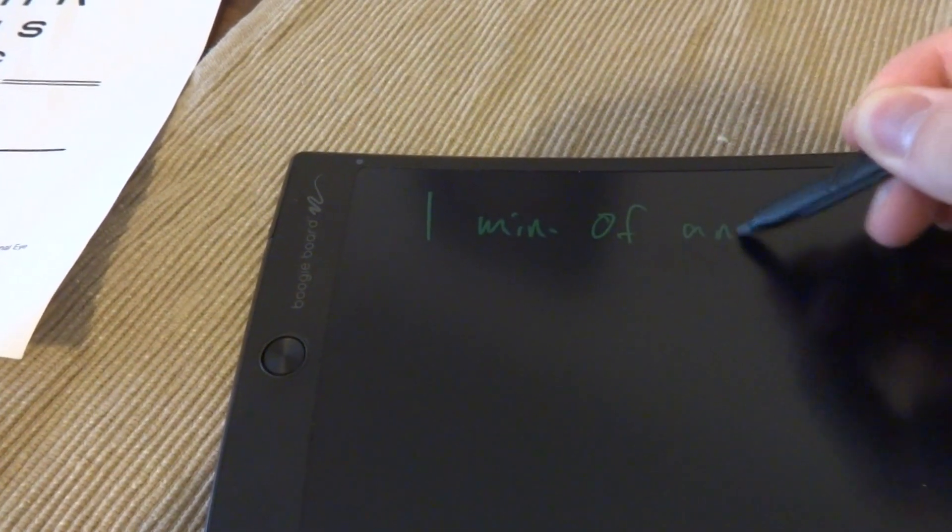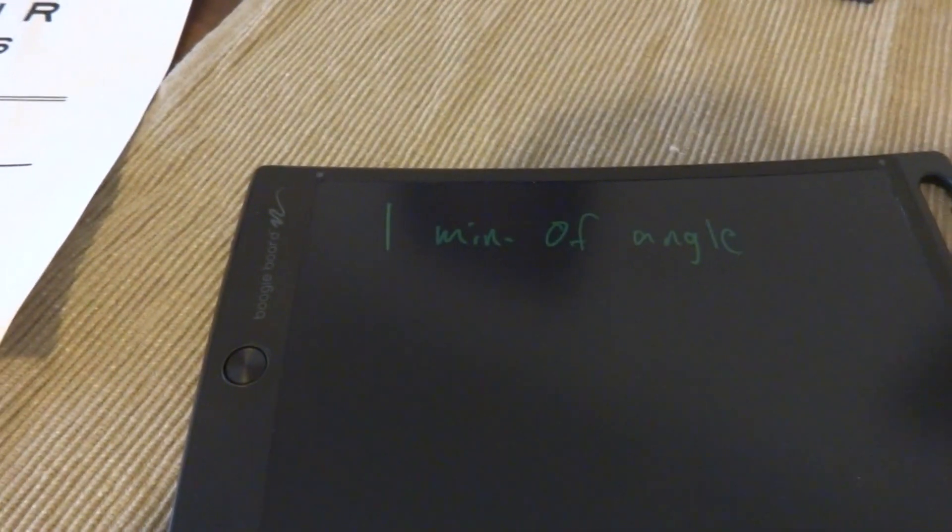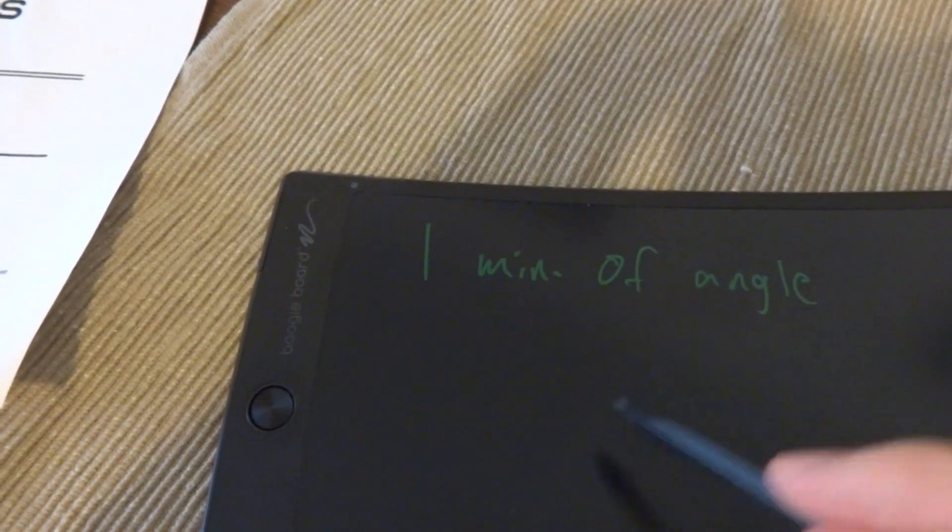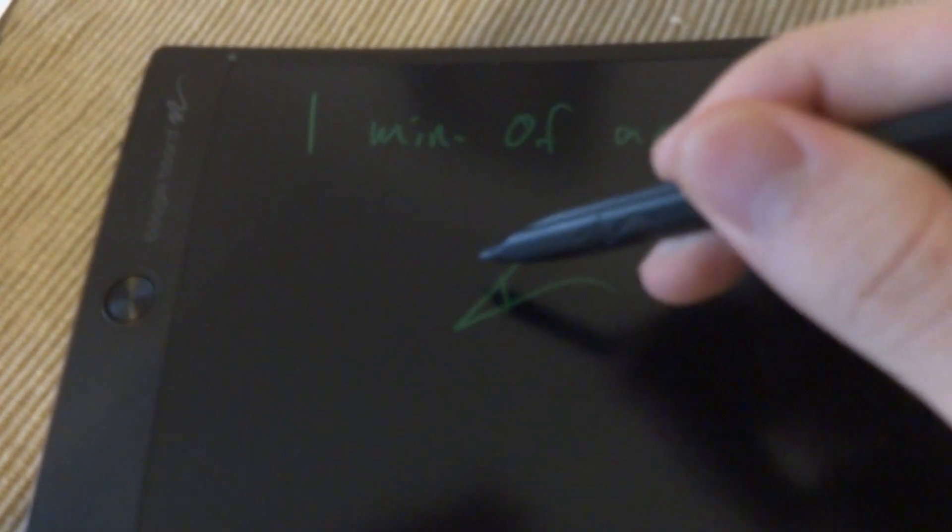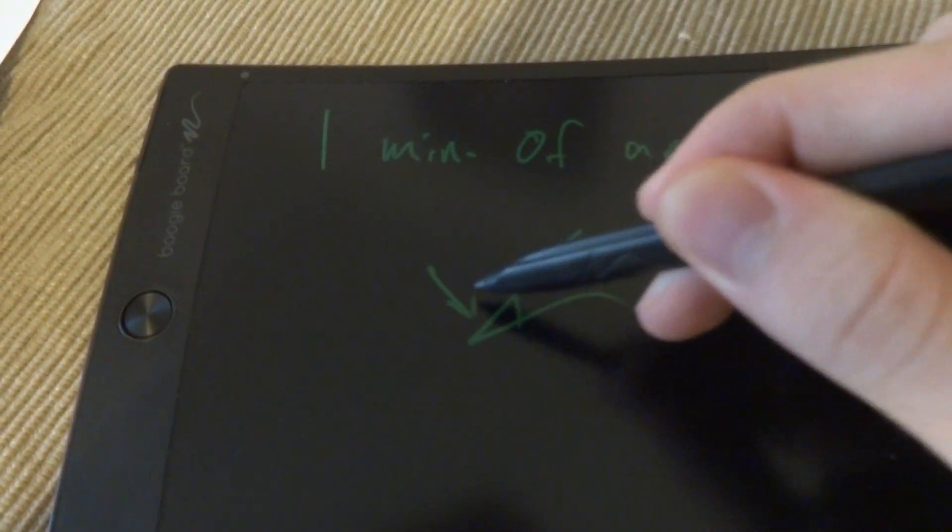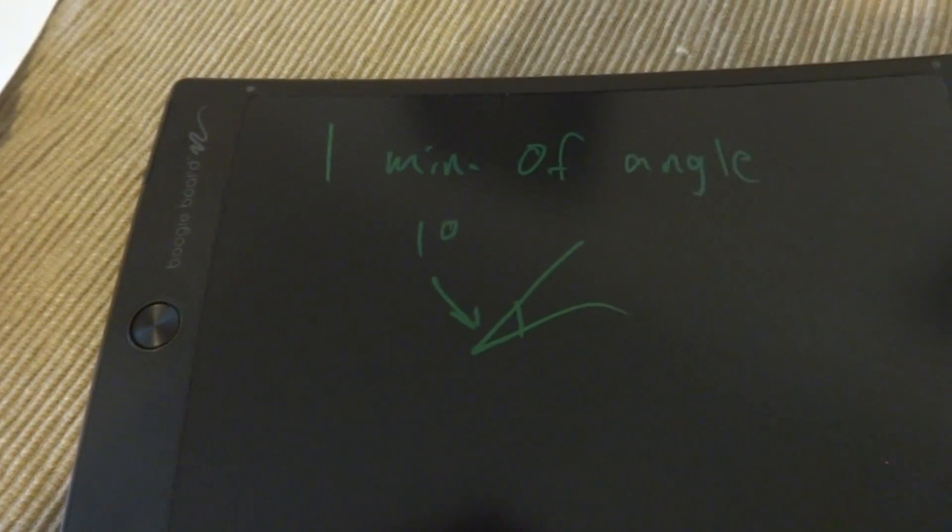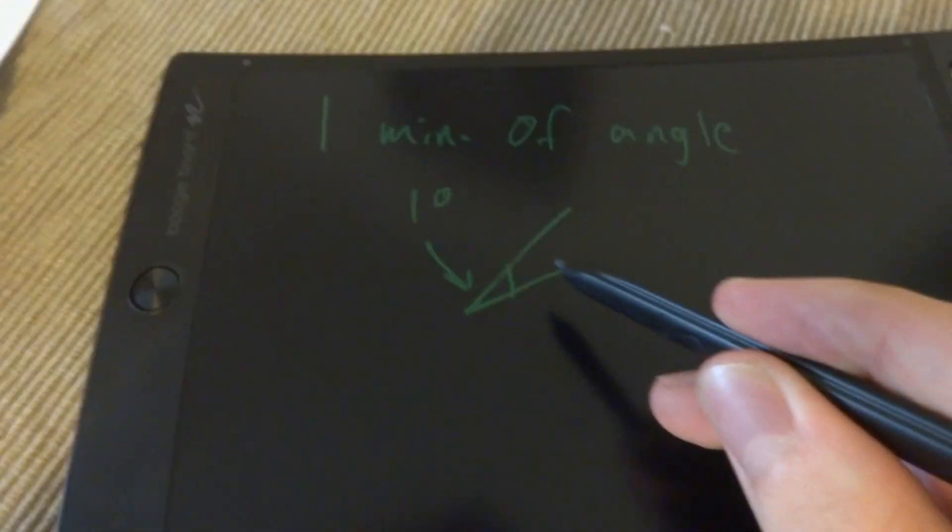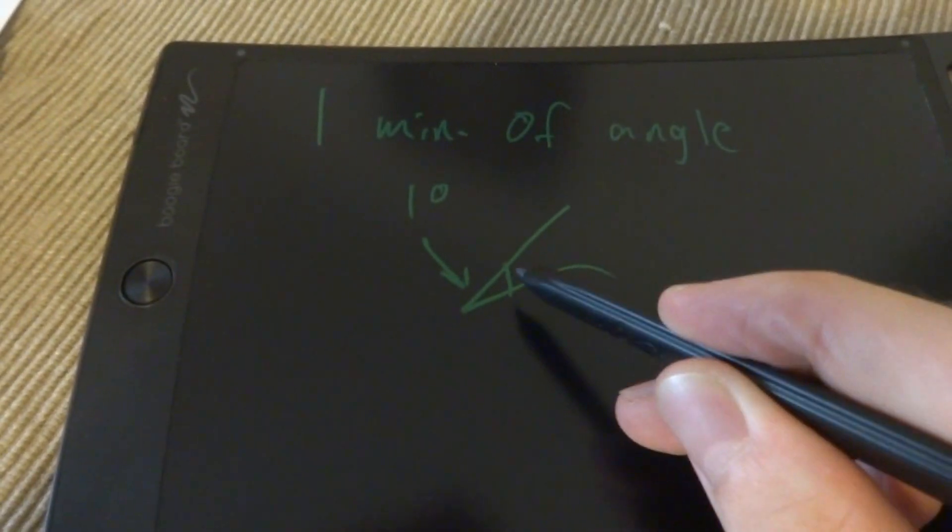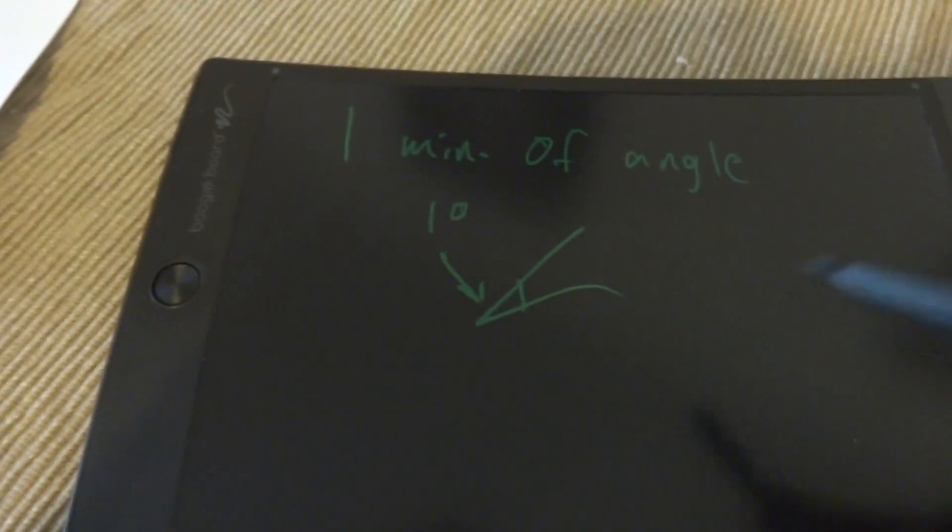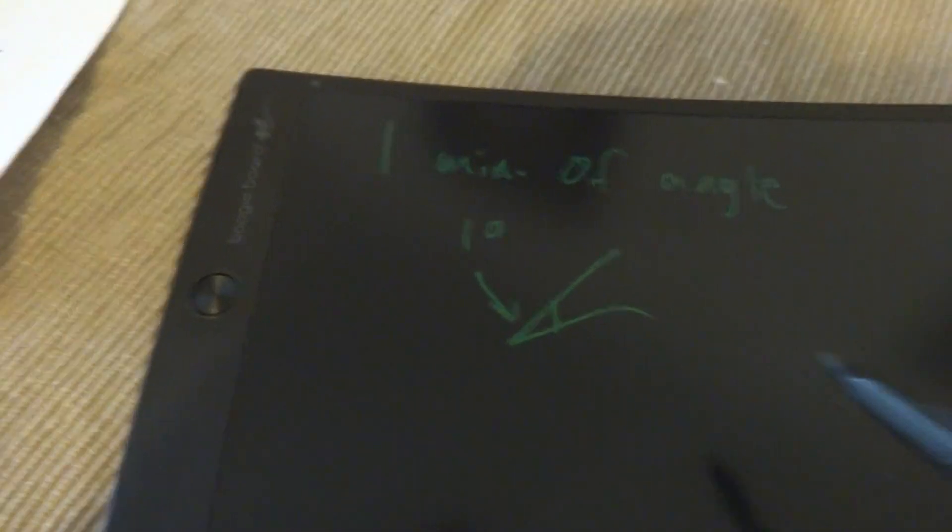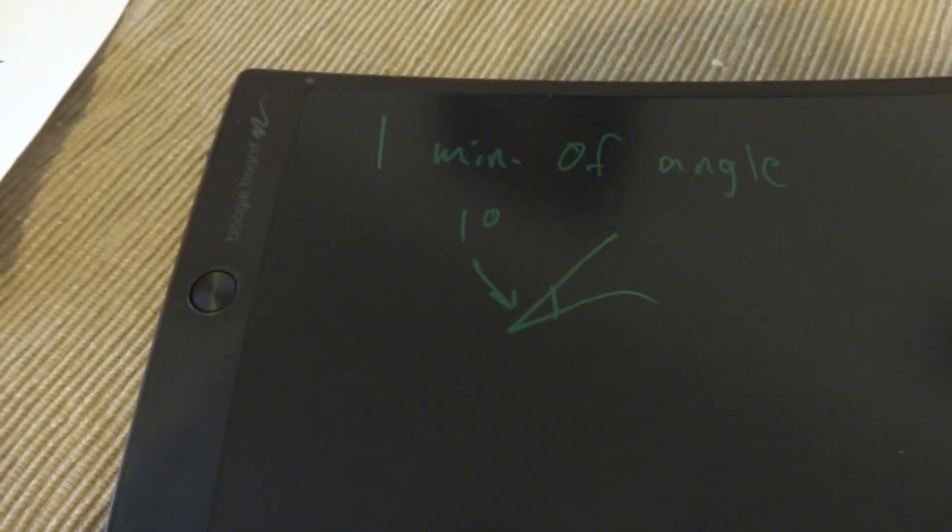What that is is actually, let's say you have an angle and this angle right here is one degree. What if you had a smaller angle than that? How would you express that? I mean, you could do like fractions of an angle, but how it's usually expressed is minutes of angle.